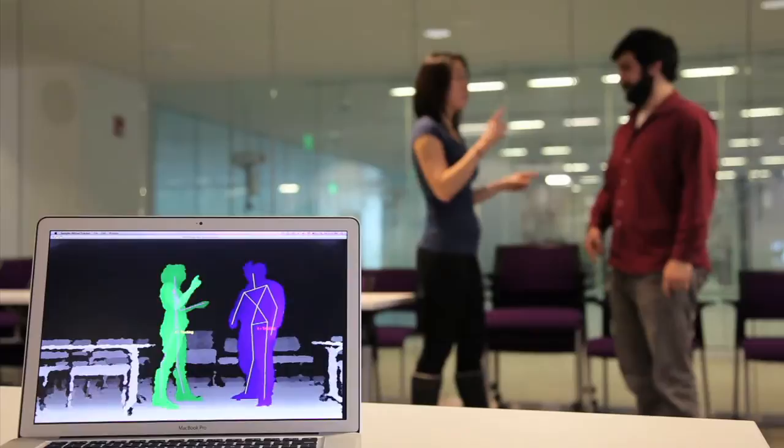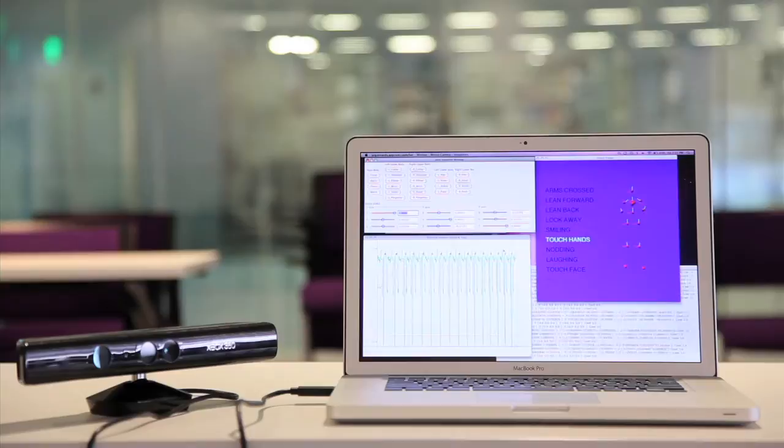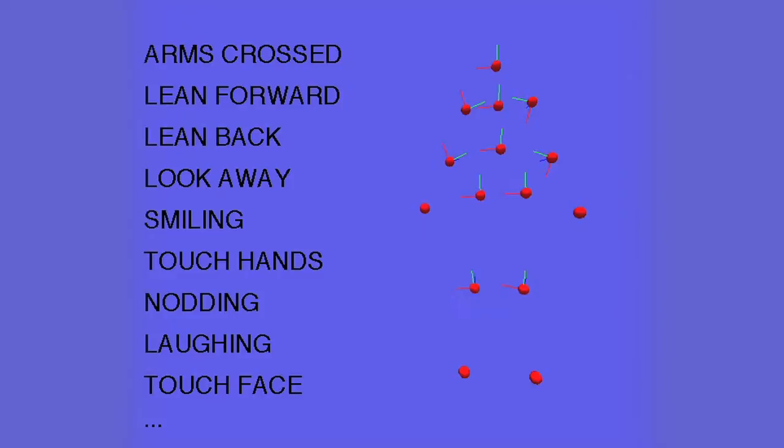By using motion capture technology like the Xbox Kinect, we can track the body movements of people. And through machine learning and gesture recognition algorithms, we can detect what nonverbal cues are being communicated.